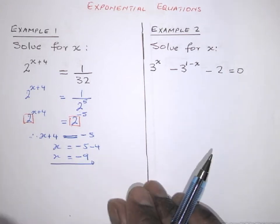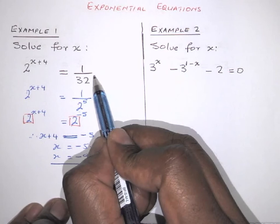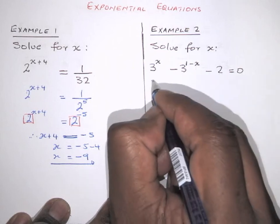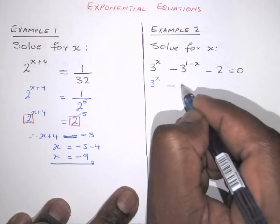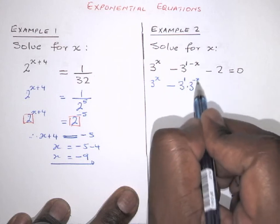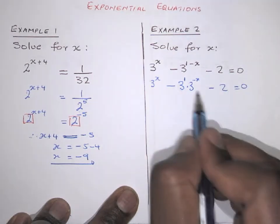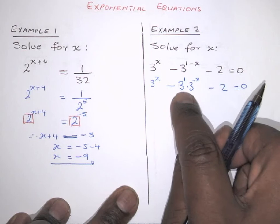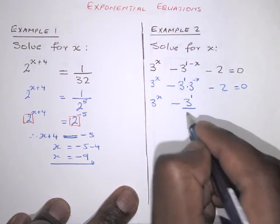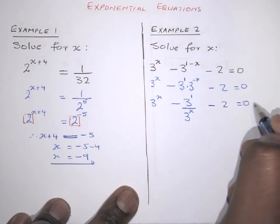Now let's look at the next example which has three terms — we can't use the same method. Look at the exponent: it has two times the exponent, so we split it. This becomes 3^x · 3^(−1) · 3^(−x) minus 2 equals zero, according to the laws of exponents. The negative exponent moves underneath: 3^x − 3/3^x − 2 = 0.